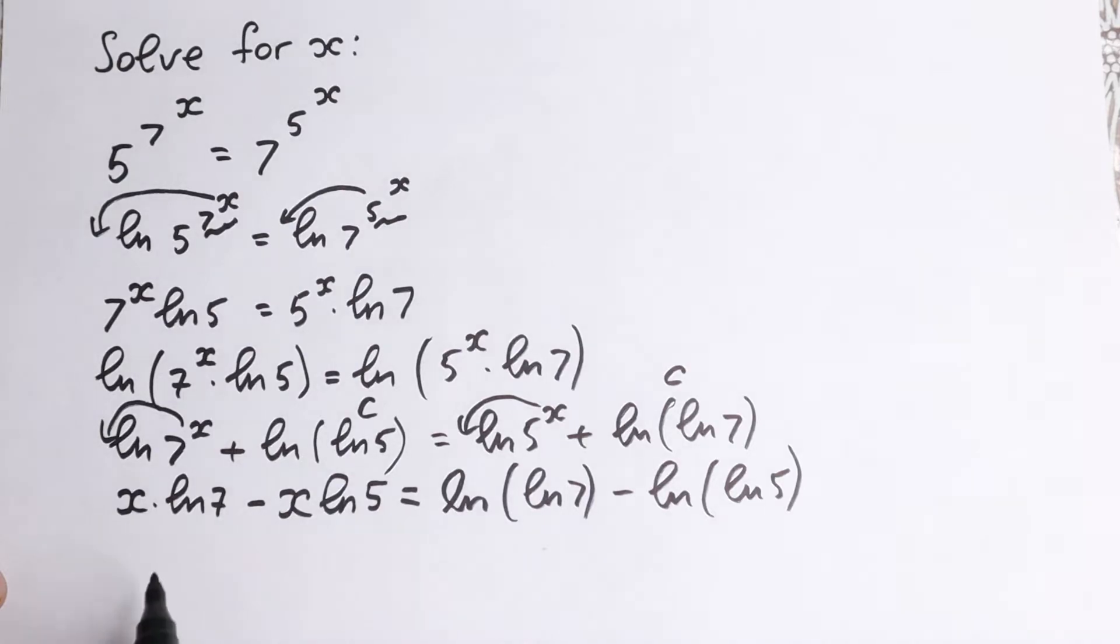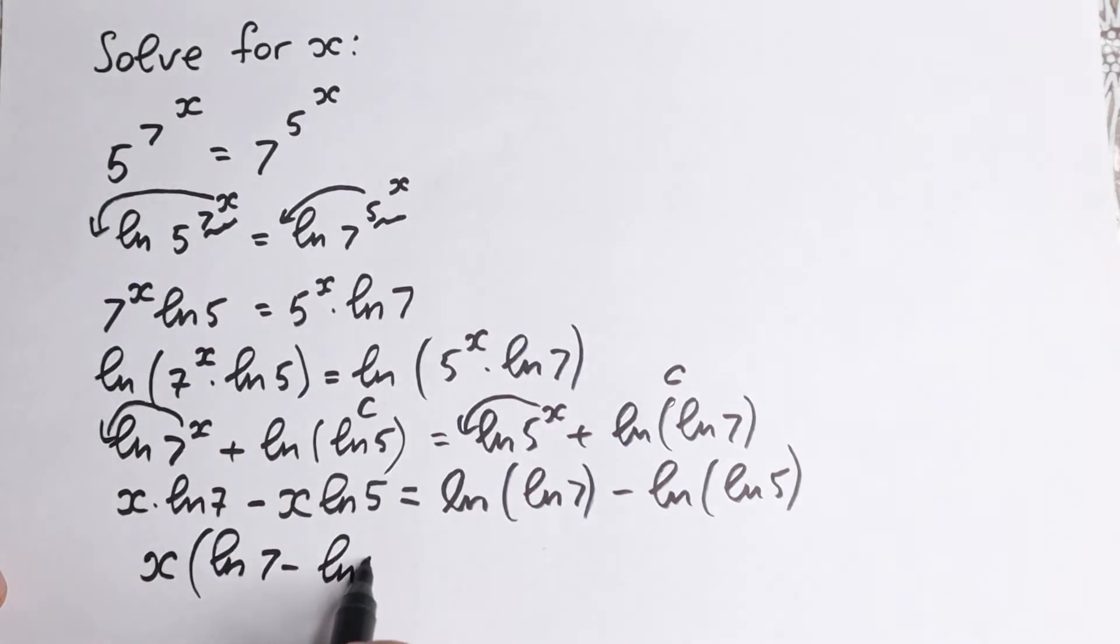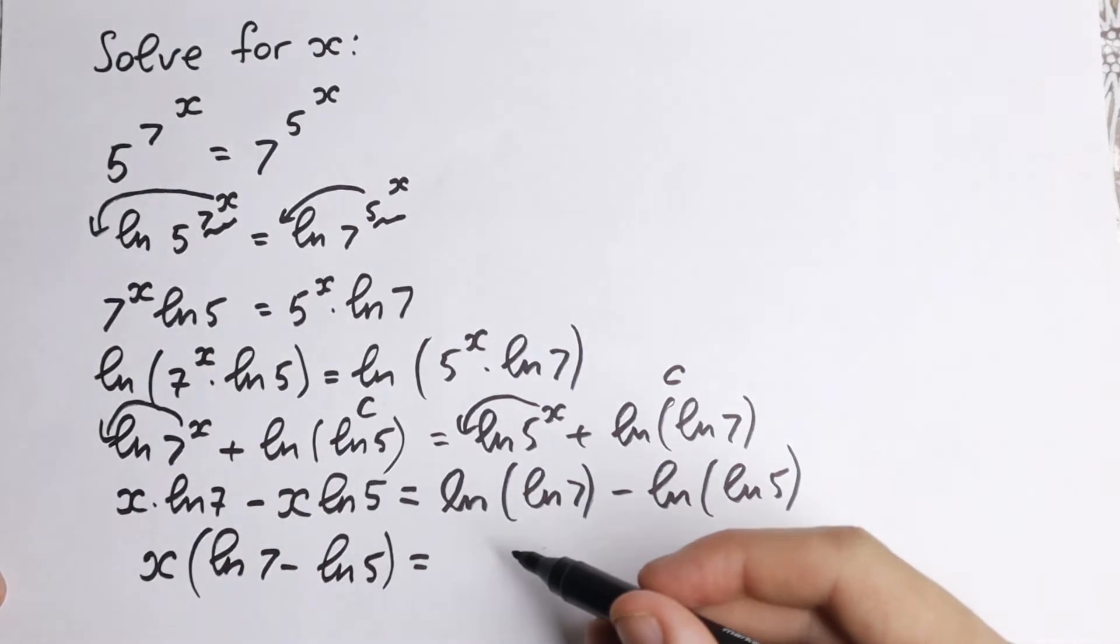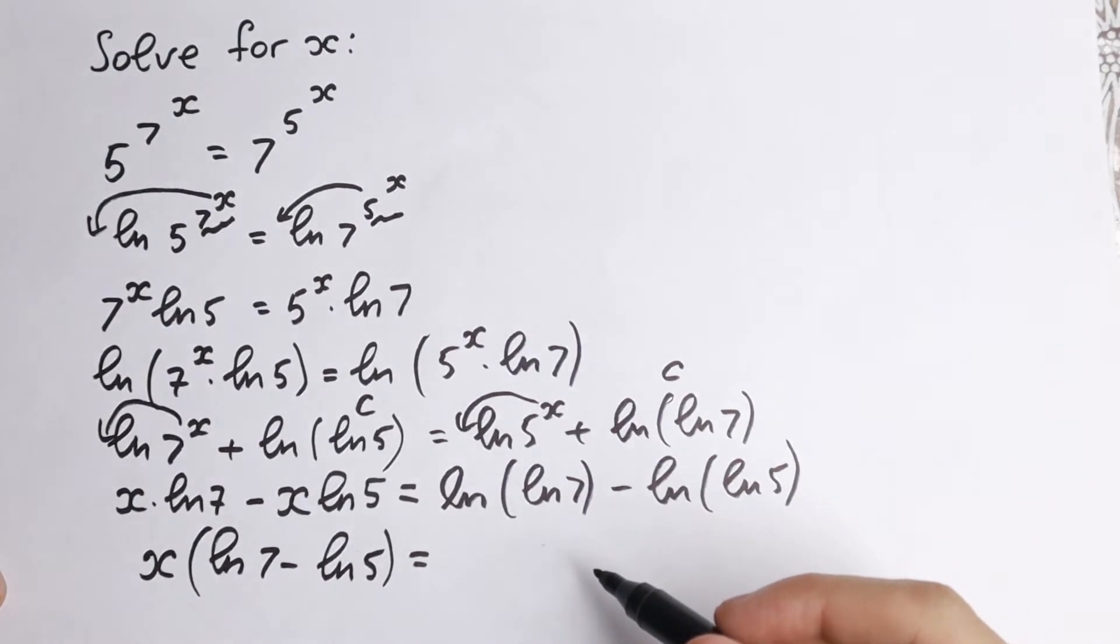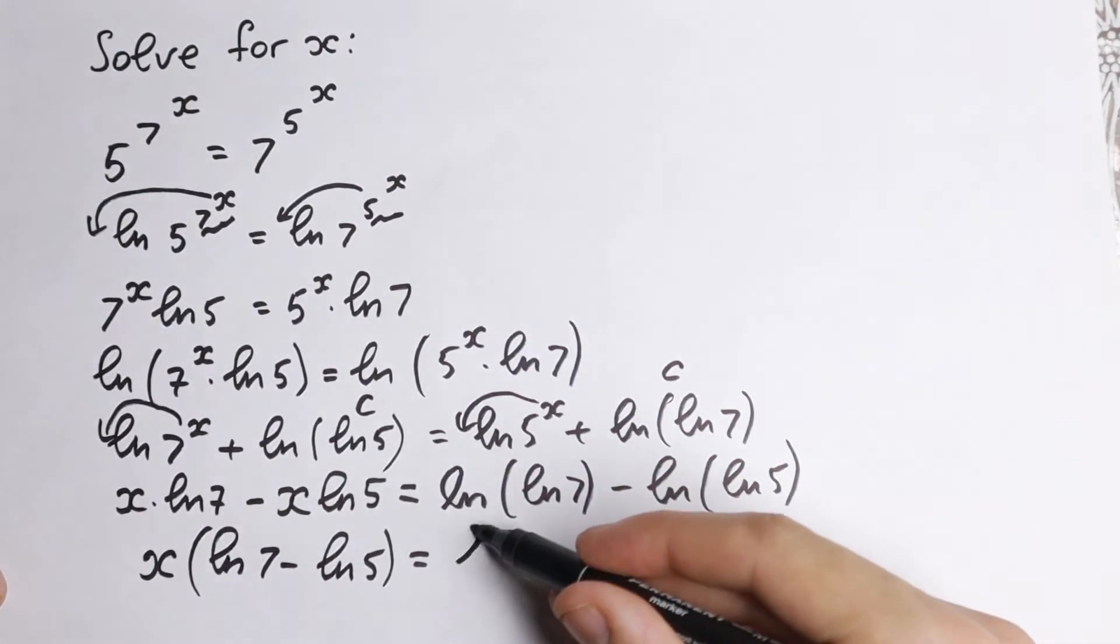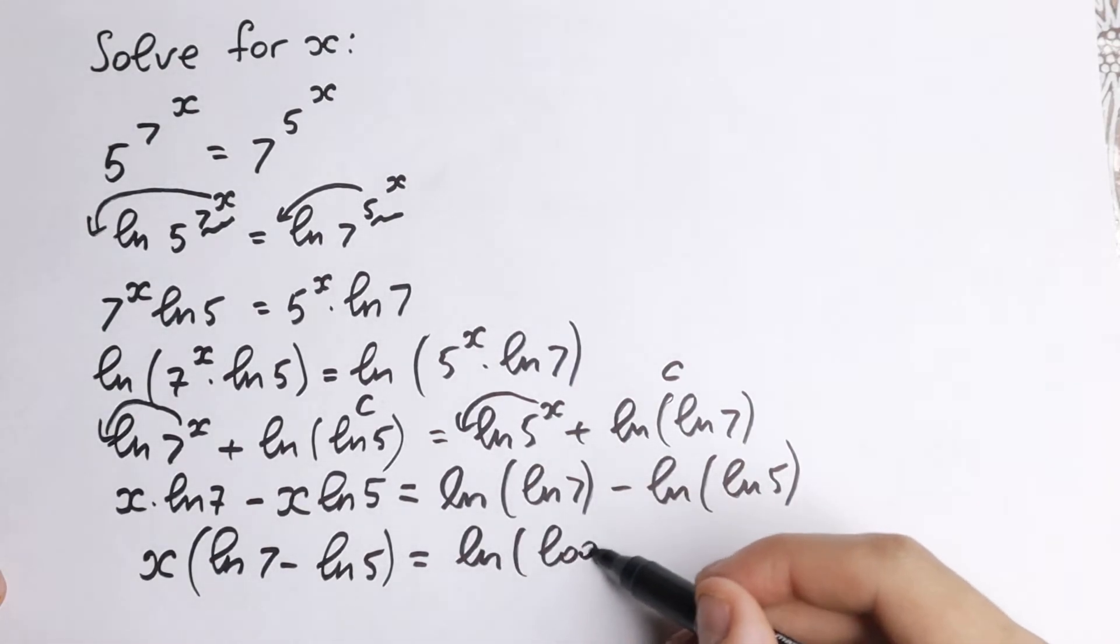Right here x is a common. We can easily factor it, so x. And in parentheses, we have ln 7 minus ln 5 equal to. Right here, the same thing. Or we can use a rule real quick right here. We can write this one as natural log of logarithm 7 base of 5.